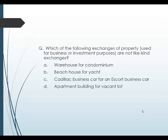Let's try a question: which of the following exchanges of property used for business or investment purposes is not a like-kind exchange? A warehouse for a condominium is like-kind because it's U.S. real property for U.S. real property. A beach house for a yacht is not, because you're going from real property to personal property — so B is the correct answer. A Cadillac for an Escort: both are cars with the same function, so that would be a like-kind exchange. An apartment building for a vacant lot: both are real property, so that's a like-kind exchange. And that's the last point on the like-kind exchange module.